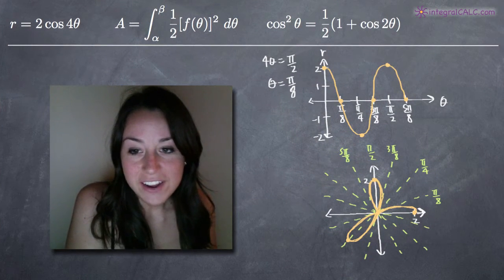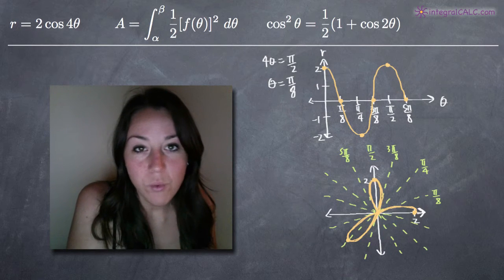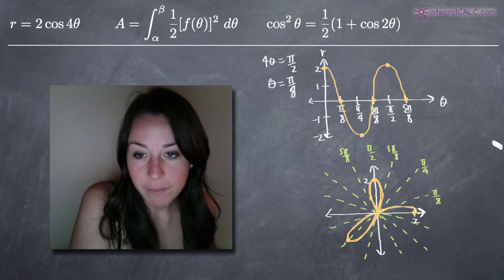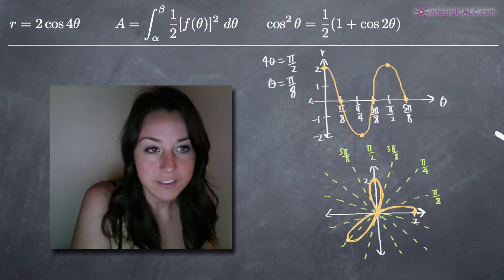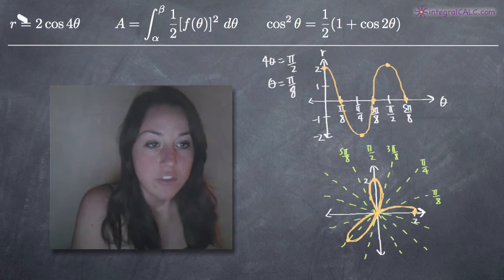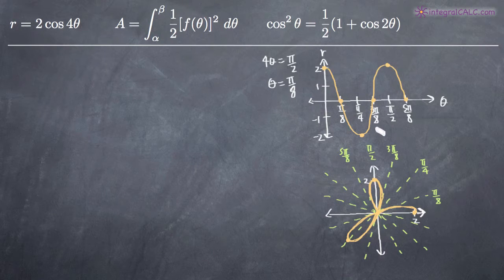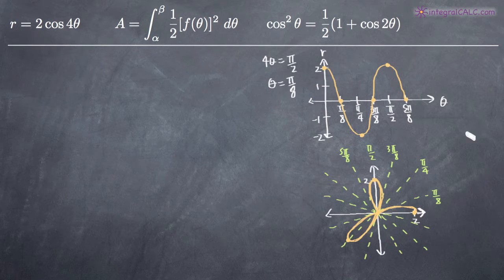Today we're going to be finding the area bounded by one polar loop — the polar area bounded by one loop of this polar equation. We've been given the equation r equals two cosine of four theta, and I've gone ahead and graphed it on a Cartesian coordinate system and then on a polar coordinate system as well.